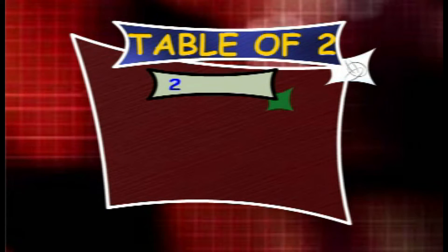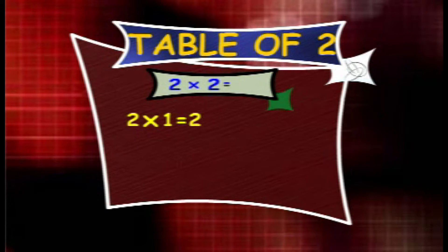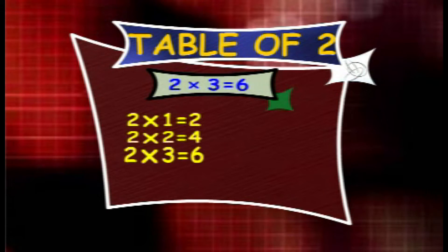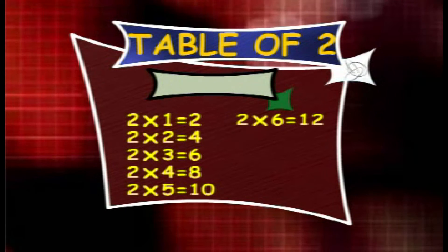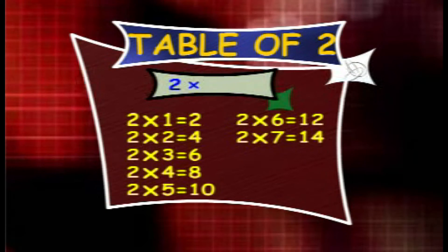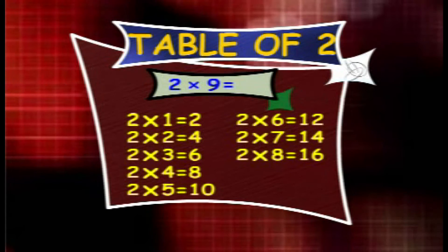Table of 2. 2 1s are 2, 2 2s are 4, 2 3s are 6, 2 4s are 8, 2 5s are 10, 2 6s are 12, 2 7s are 14, 2 8s are 16, 2 9s are 18, 2 10s are 20.